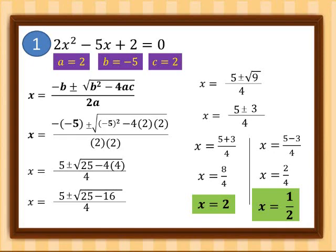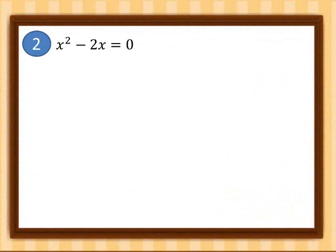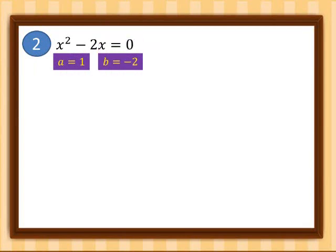Let's proceed to our second example: x² − 2x = 0. So a = 1, b = −2, and since we don't have a constant term, c = 0.